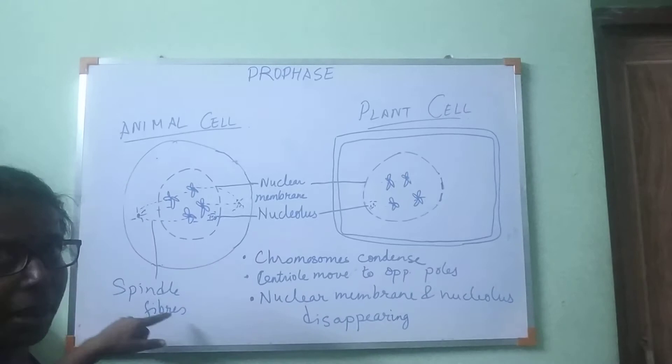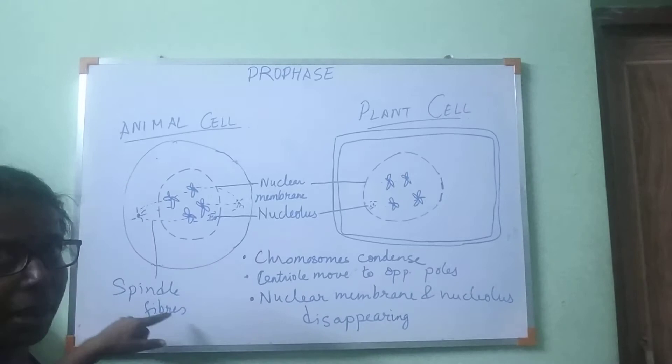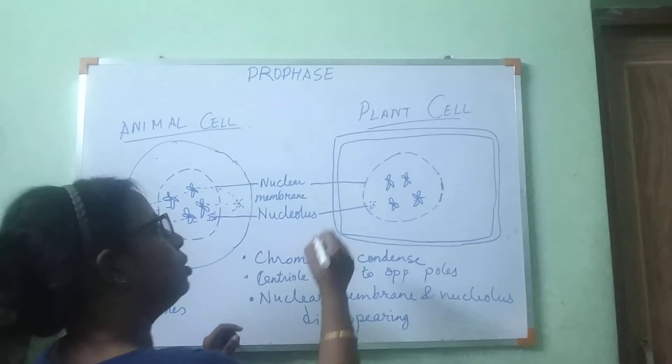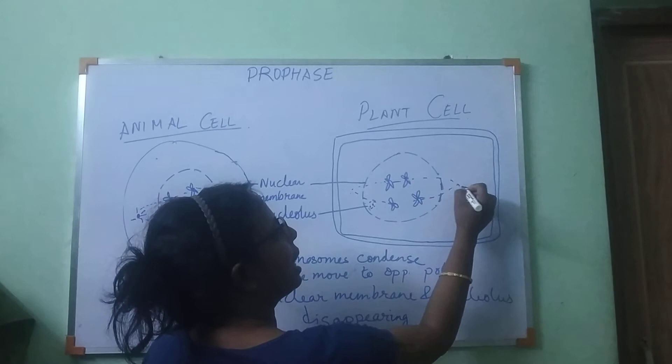In plant cells, there is no aster or centriole. But even though there are no centrioles, still the spindle fibers arise from the cytoplasm and get connected with the centromere. So, spindle fibers still form in plant cells.